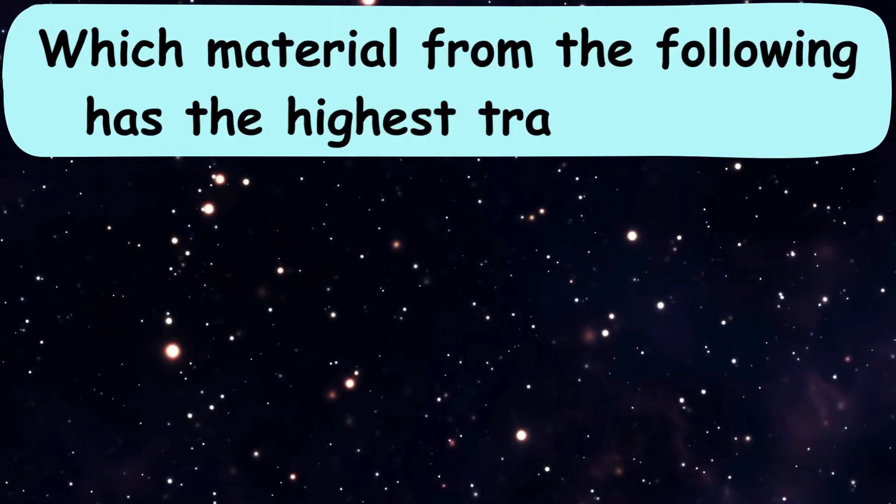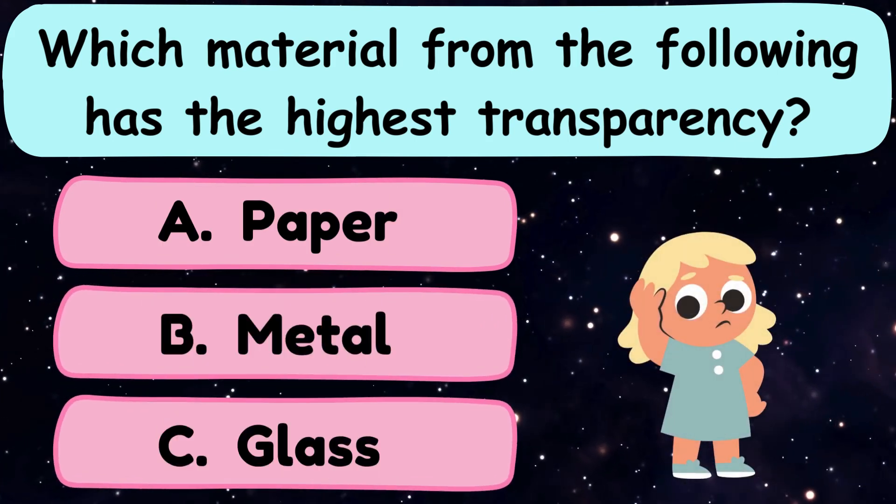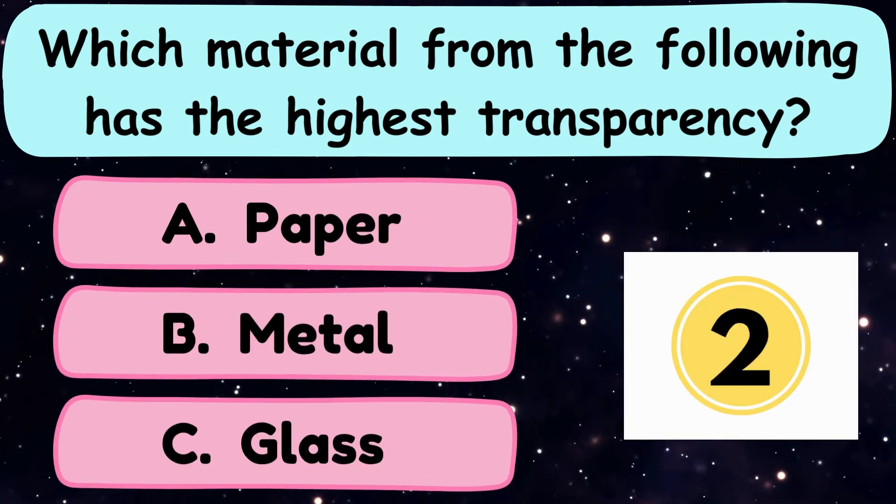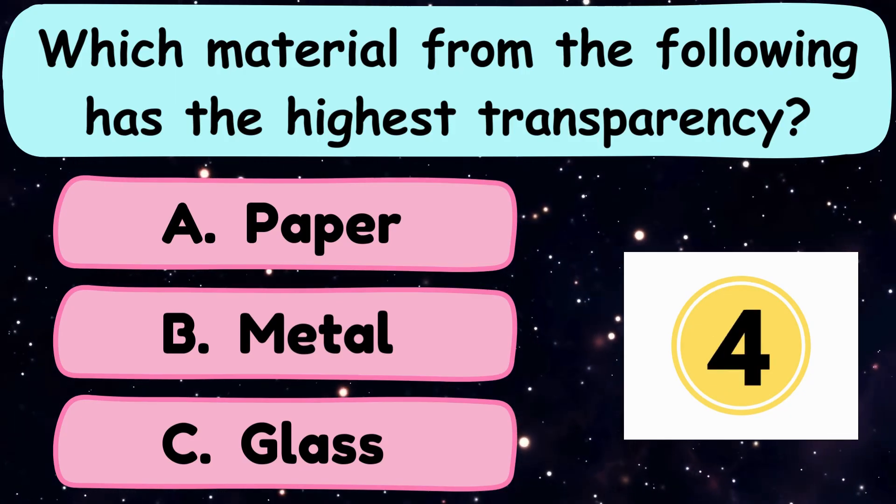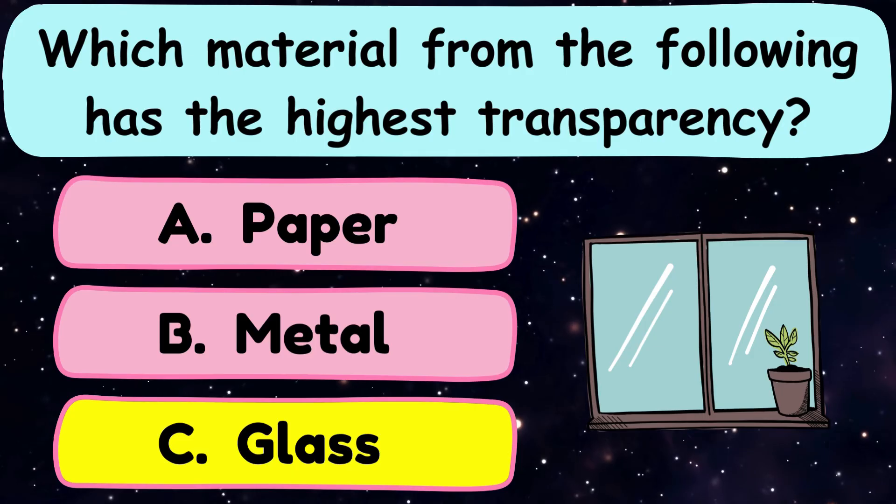Question number 33. Which material from the following has the highest transparency? A. Paper, B. Metal, or C. Glass? And the correct answer is option C. Glass.